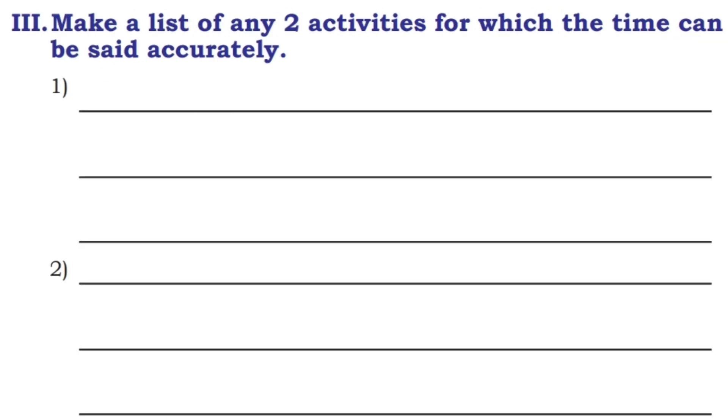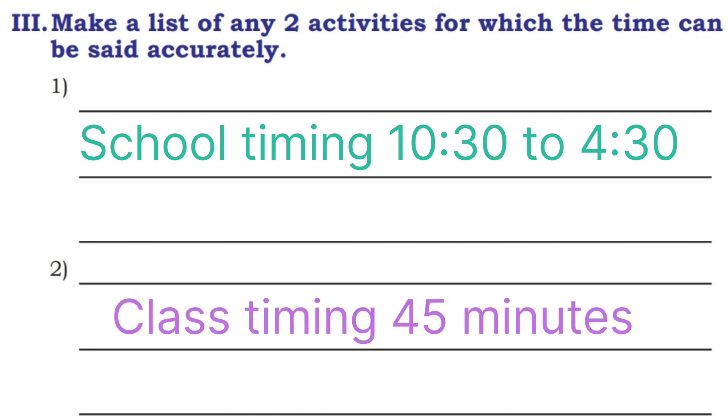Next, third question. Make a list of any two activities for which the time can be set accurately. Accurate timing should be written for one activity. Exact timing. So school timing, you come morning 10:30 and leave at 4:30. Every day timing is same, it doesn't change.